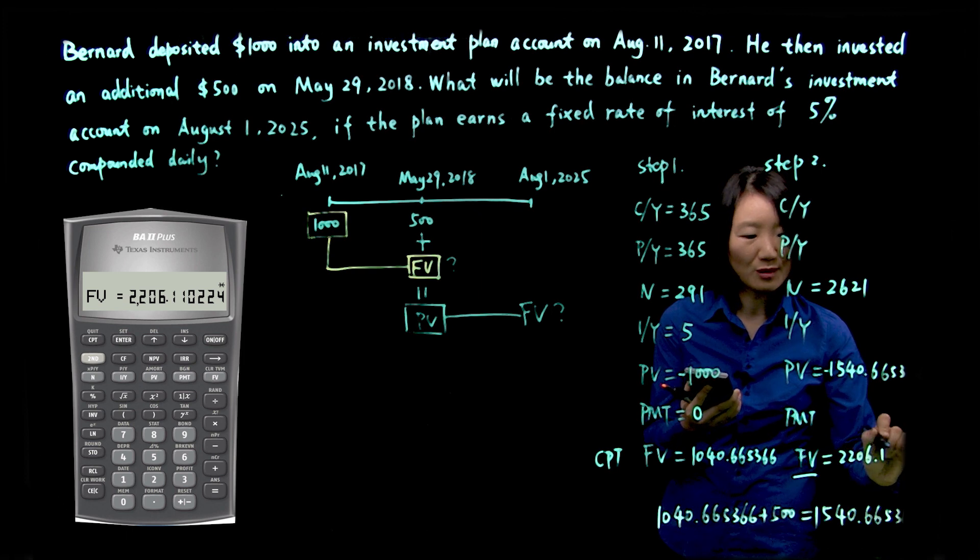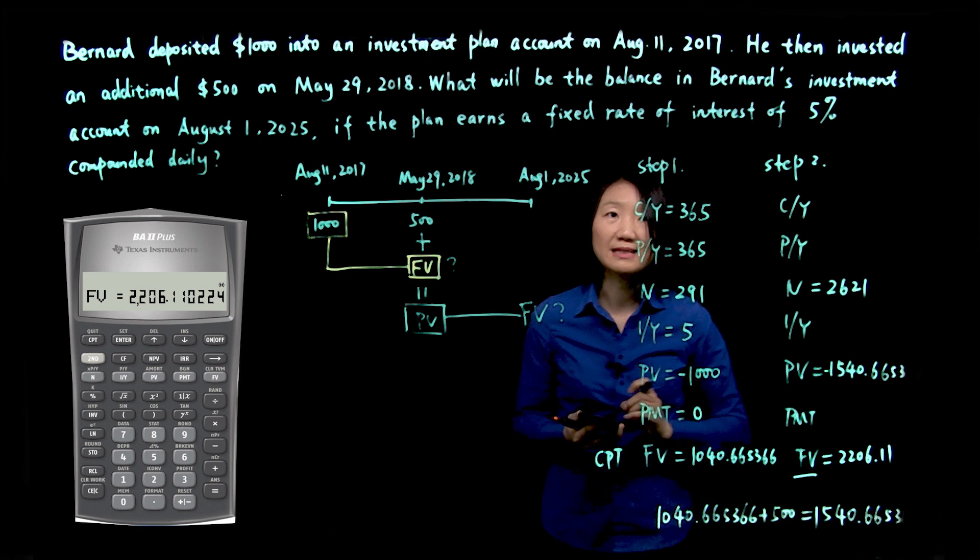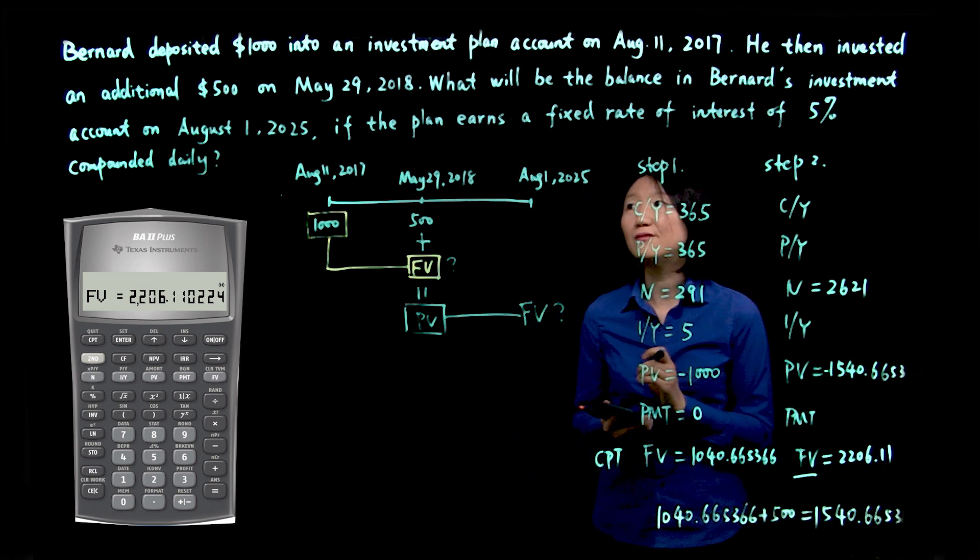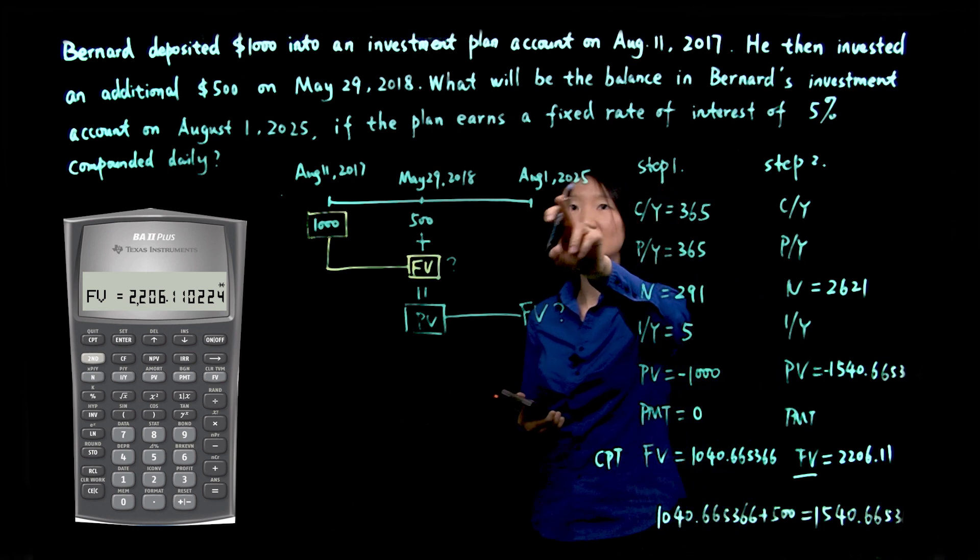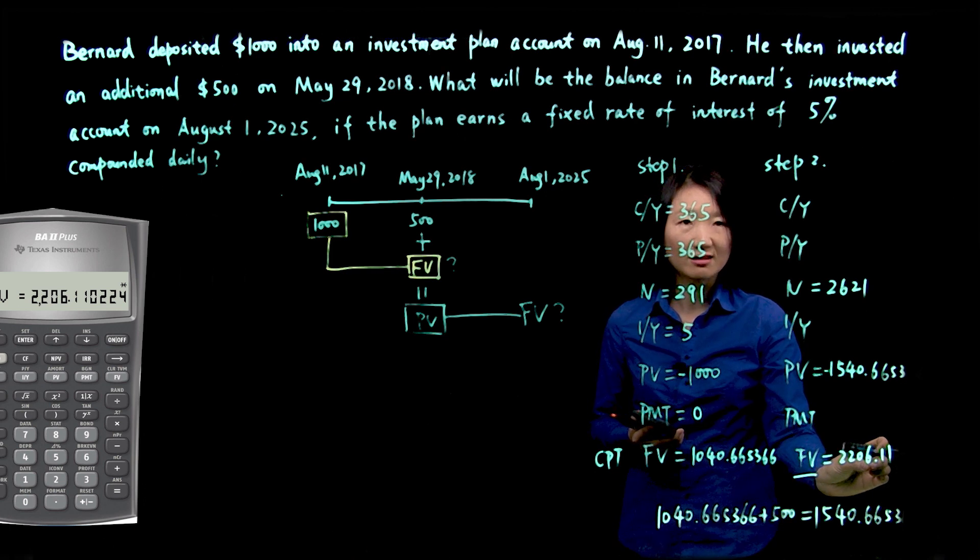It's 2206.11. Now this time, I'll round it to two decimal places. So our final answer, how much Bernard will have on August 1st, 2025 is $2,206.11.